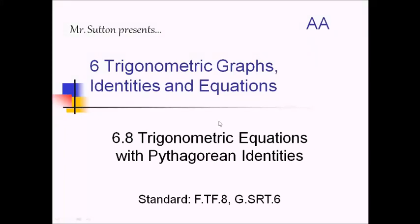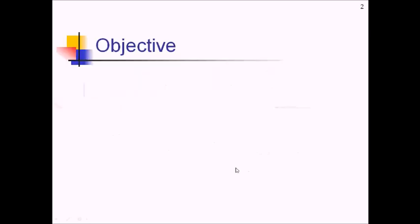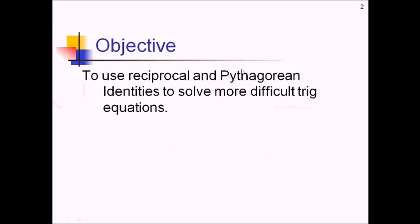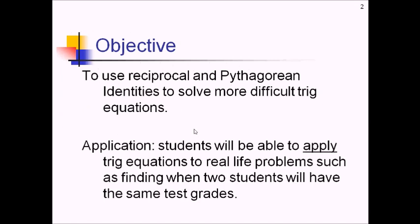So here we are, Mr. Sutton, bringing you lesson three of our trig equation series. In this one, we're going to be using reciprocal and Pythagorean identities to solve even more difficult trig equations than the last one. And for our real-life payoff here, students will be able to figure out when two students have the same test grades. Stay tuned.